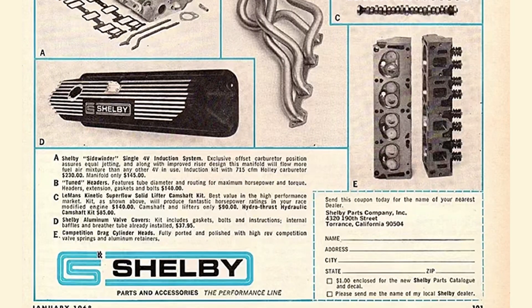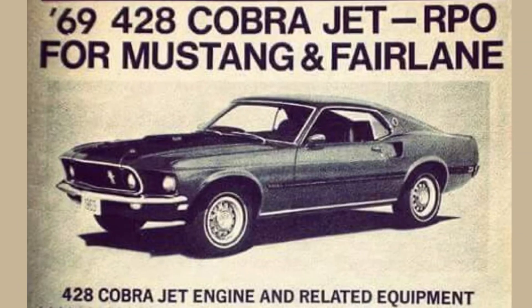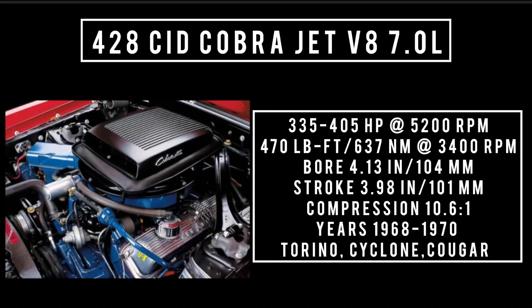In 1968 Ford introduced the 428 Cobra Jet, which featured additional webs cast into the main bearing saddles. 428 cubic inch displacement Cobra Jet V8, 7 liters. Good for anywhere between 335 to 405 horsepower at 5,200 RPM, 470 pound-feet or 637 newton meters at 3,400 RPM, with a bore of 4.13 inches and a stroke of 3.98 inches. Compression was 10.6 to 1. Offered from 1968 to 1970, found in the Cougar, Cyclone, and GT500KR.